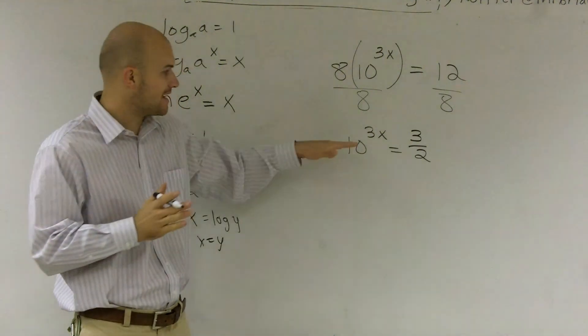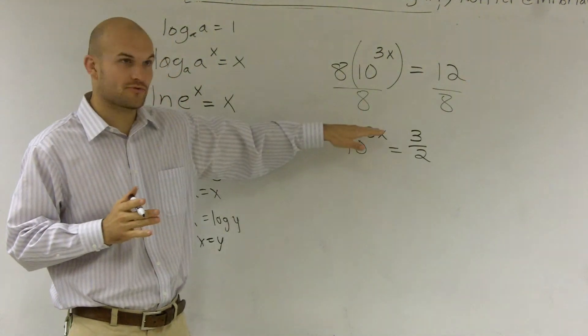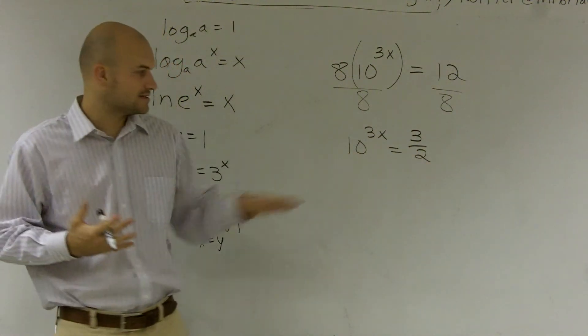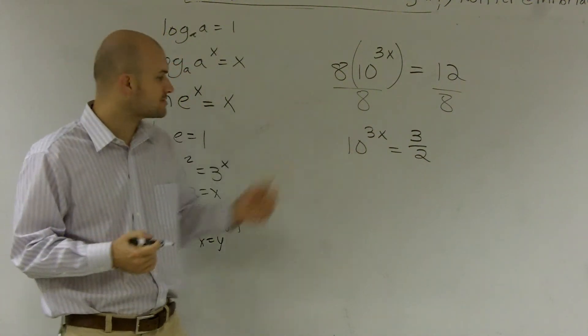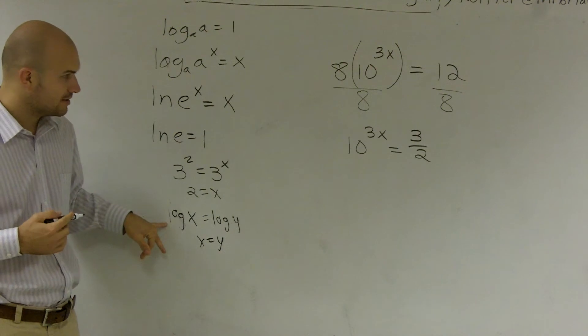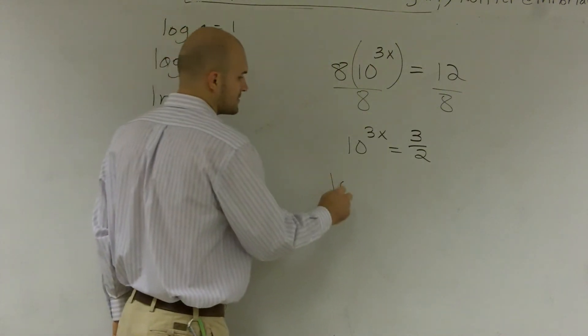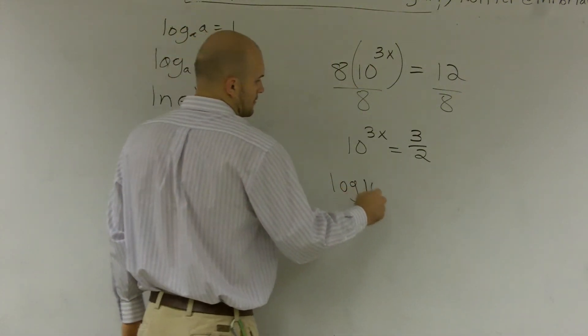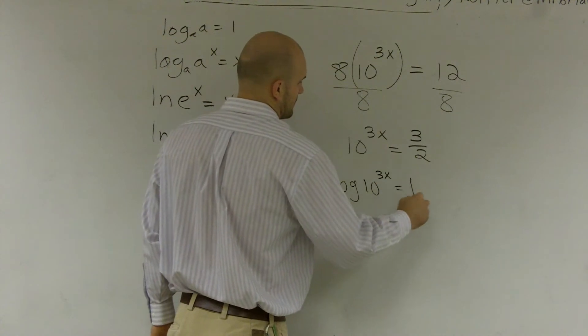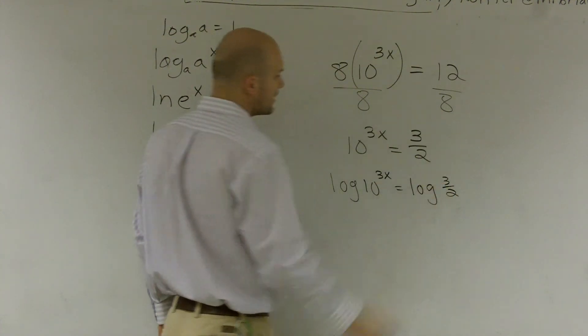Now what I have is I have this base raised to the 3x equals 3 halves. So now what I can do is, again, I need to get rid of this base. So I'm going to use my one-to-one property by taking a logarithm of both sides.